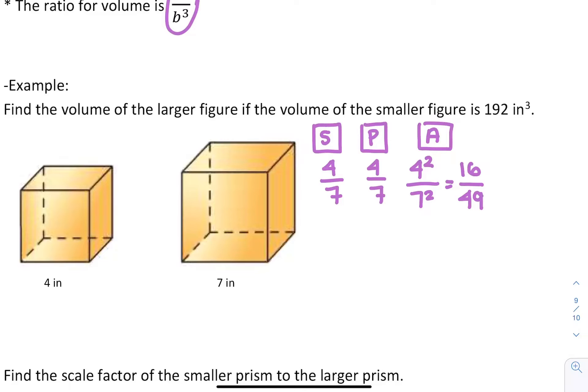And then finally, our volume ratio is A cubed over B cubed, so 4 cubed over 7 cubed, which is 64 over 343.